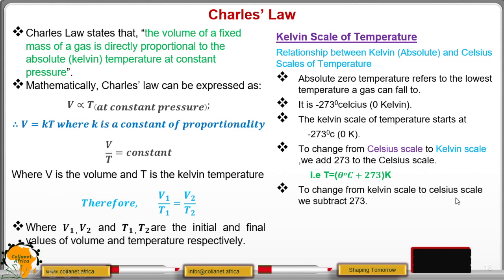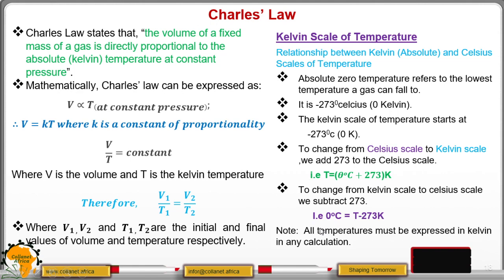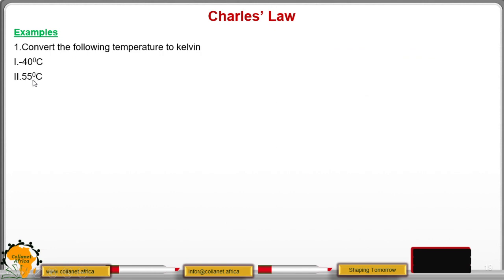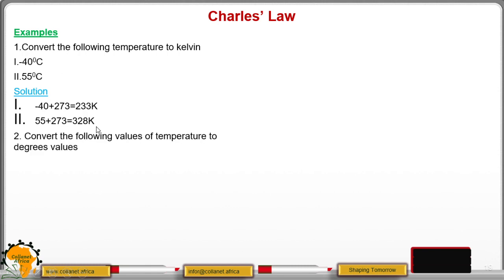To change from Kelvin scale to Celsius scale, we do the opposite — we subtract: temperature in Celsius equals Kelvin minus 273. When doing calculations of gas laws, always ensure the temperature is expressed in Kelvin. For example, convert the following temperatures to Kelvin: negative 40 degrees Celsius plus 273 gives 233 Kelvin; and 55 degrees Celsius plus 273 gives 328 Kelvin.